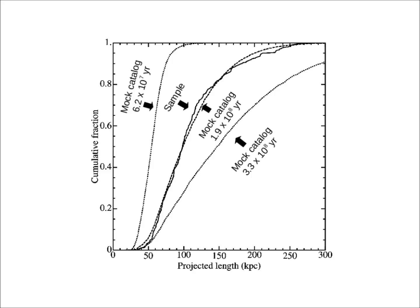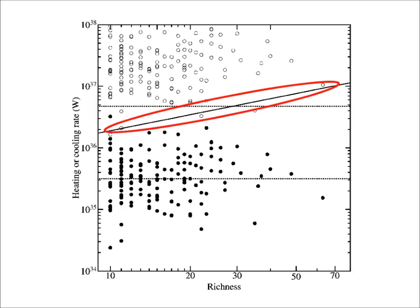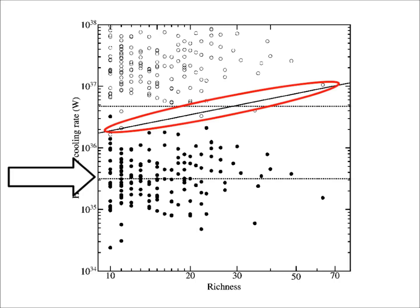We now use the measured jet powers and lifetimes of the FR2s in our sample to better constrain their impact on cluster heating. In this figure, the solid line represents the average cooling of clusters of different sizes, and the open points represent the jet powers that we measure in our sample. It is clear that the jets provide more than enough power to quench cooling in galaxy clusters. However, we find that only a small fraction of this energy escapes the radiolobes and heats the general cluster gas. These estimates are represented by the solid points, and they are all substantially below the cooling line.